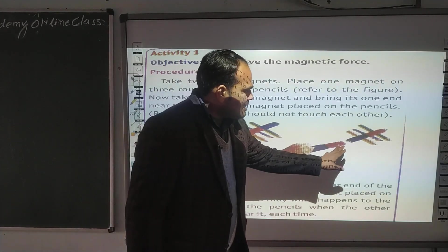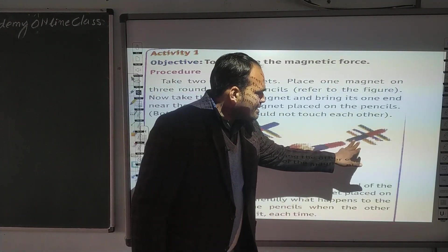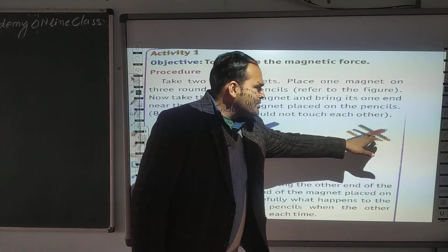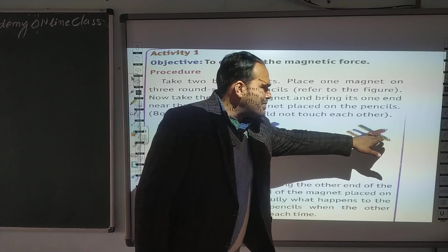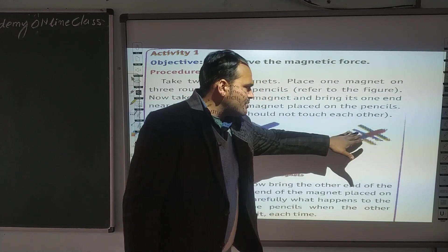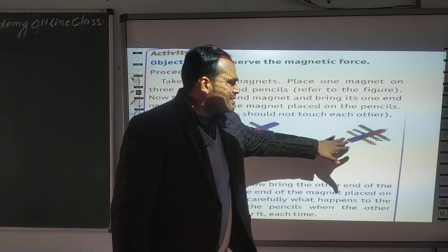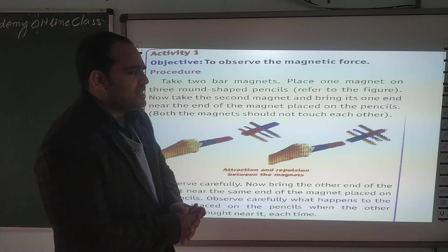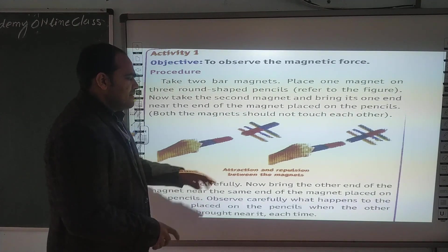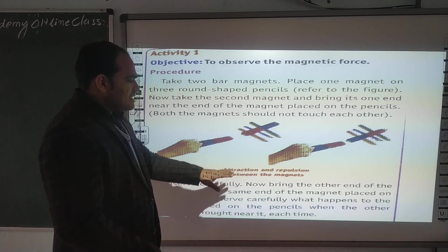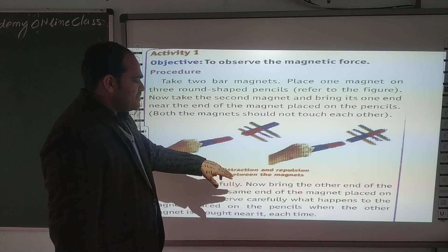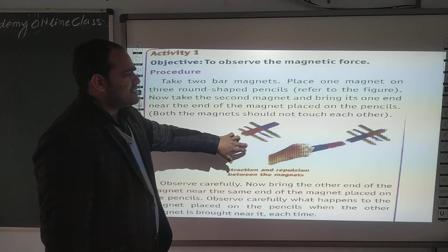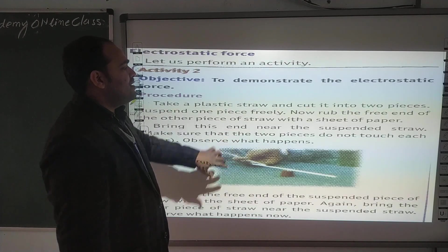अगर opposite direction के magnets को लिया है, तो यहाँ पे pencil roll करेगी और इस पे जो magnet रखा हुआ है वो आगे इससे attract हो जाएगा। तो this is attraction and repulsion between the magnets. This is the observation.